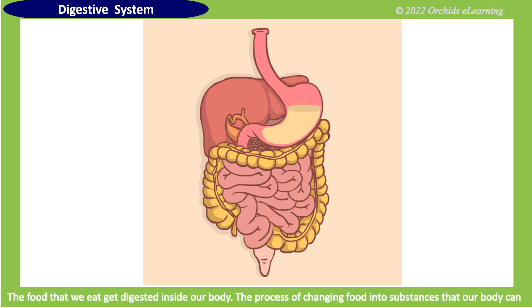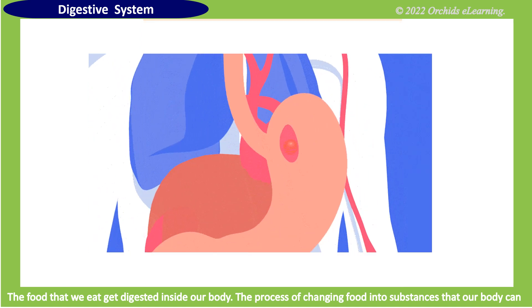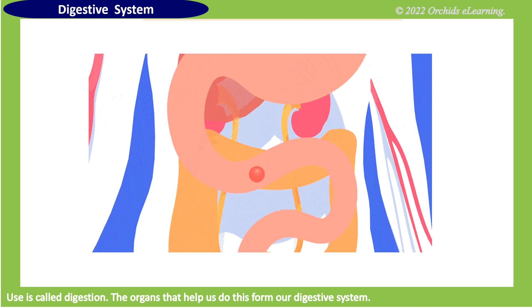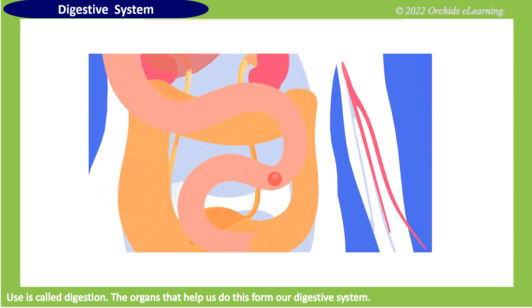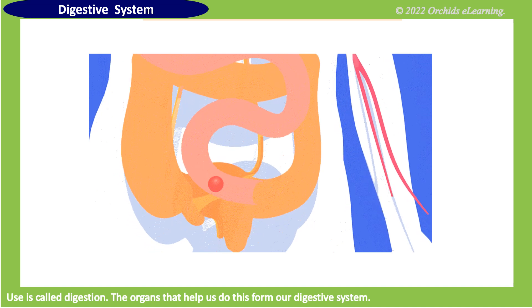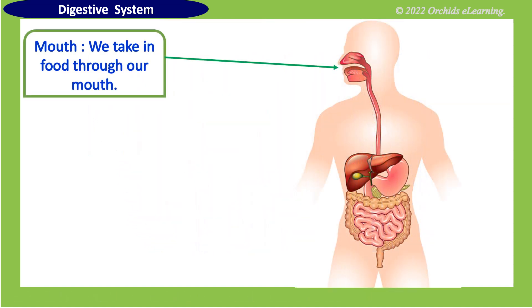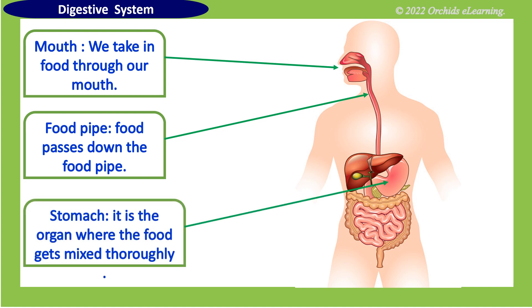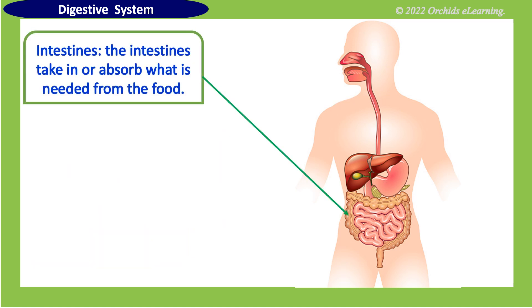Digestive system: the food that we eat gets digested inside our body. The process of changing food into substances that our body can use is called digestion. The organs that help us do this form our digestive system. We take in food through our mouth. Food passes down the food pipe. The stomach is the organ where the food gets mixed thoroughly.